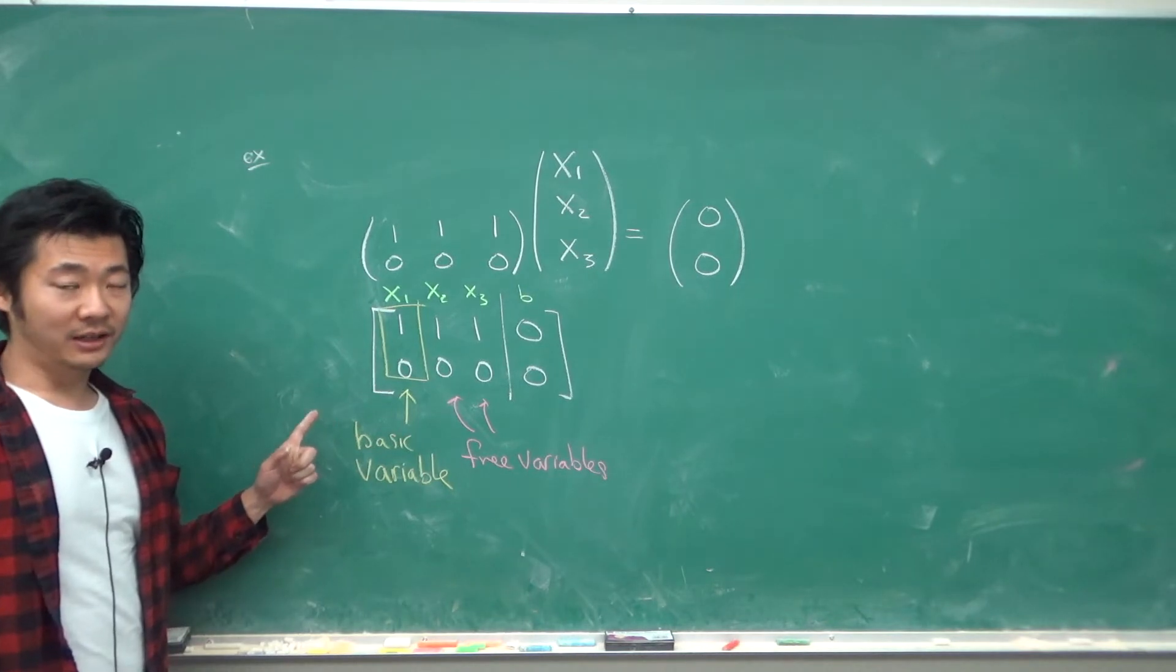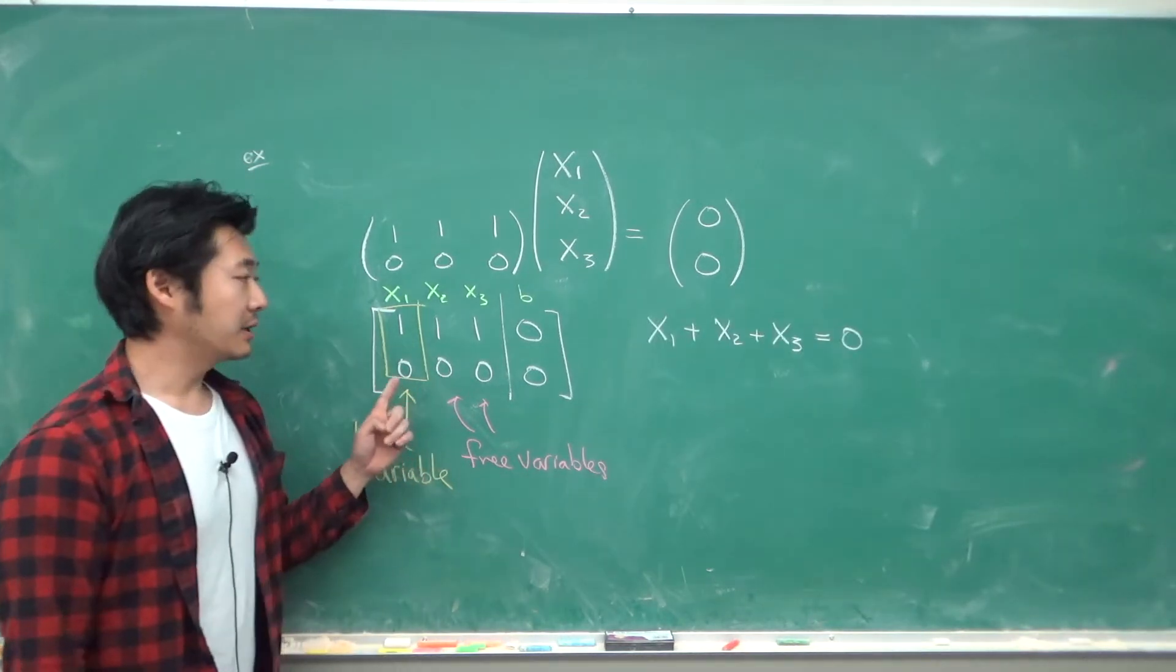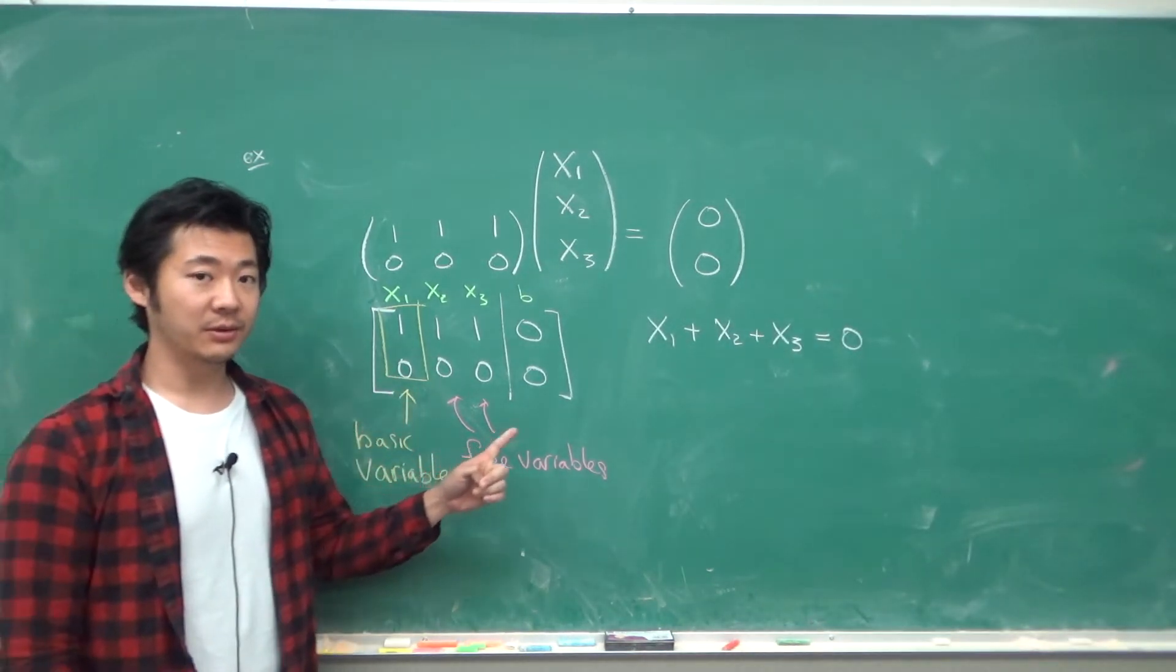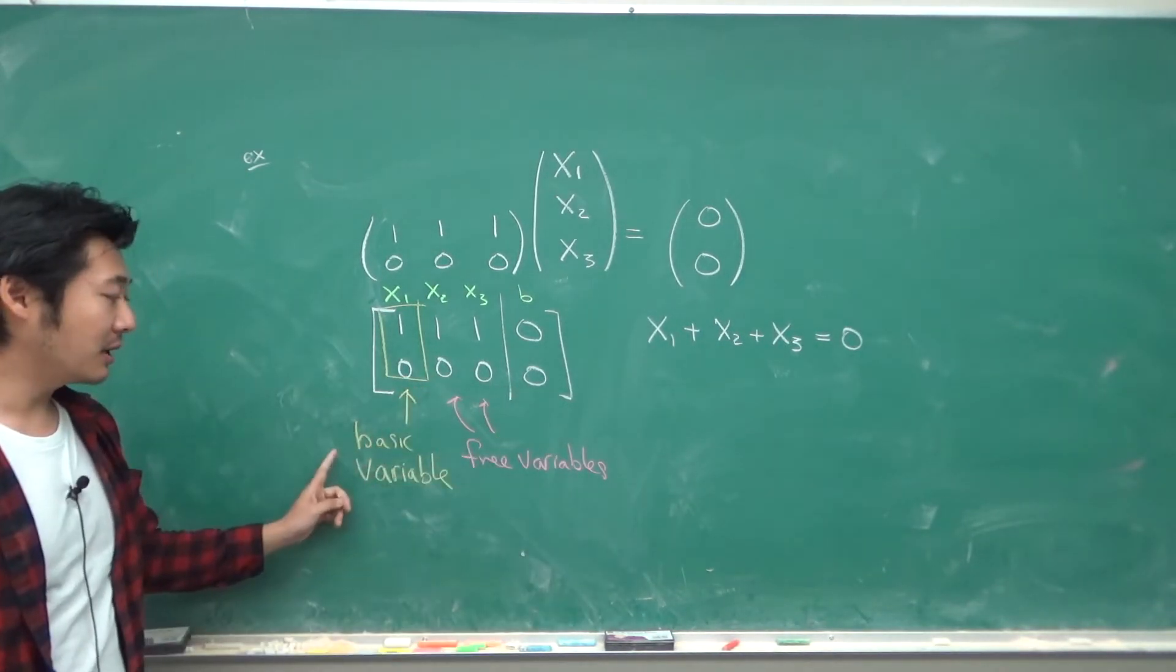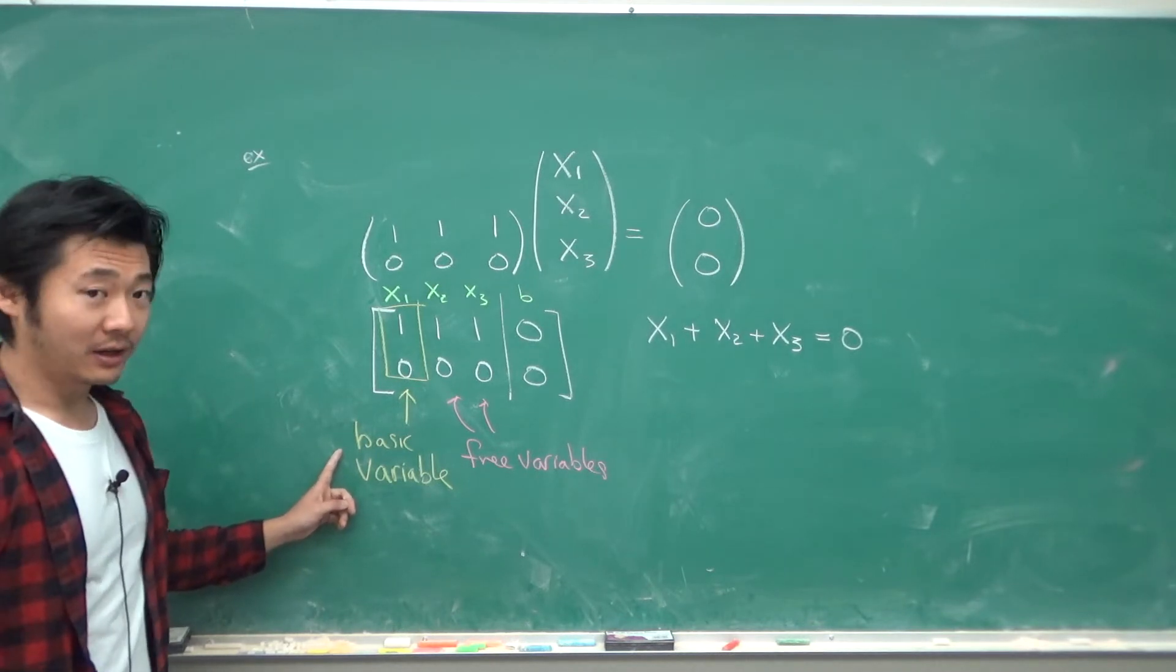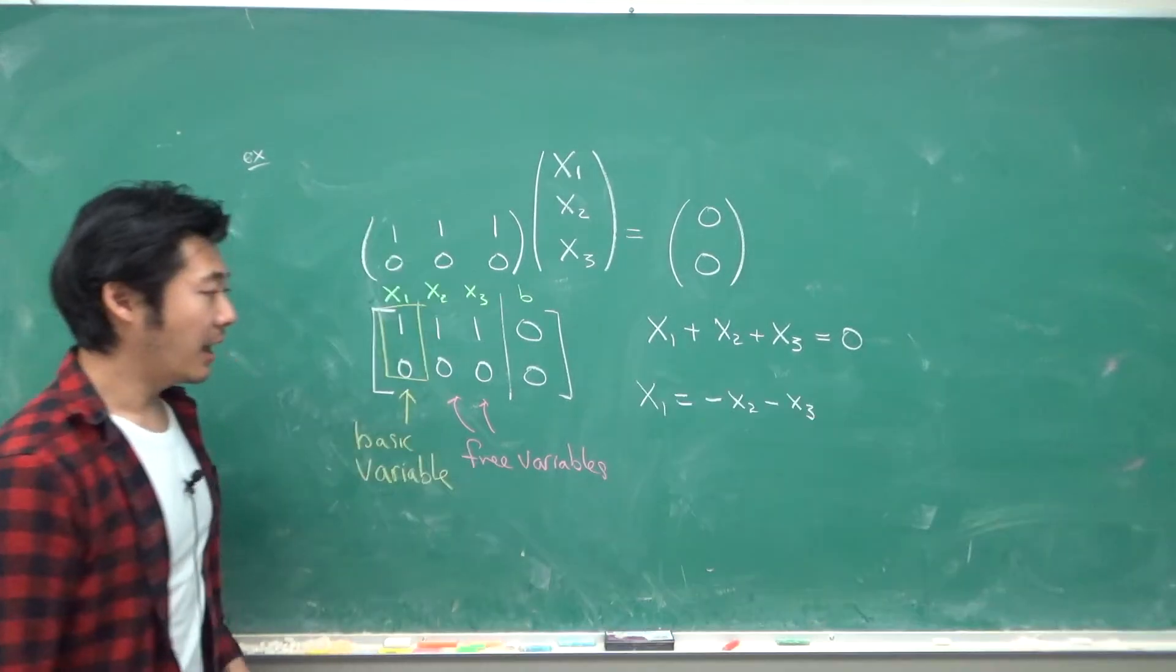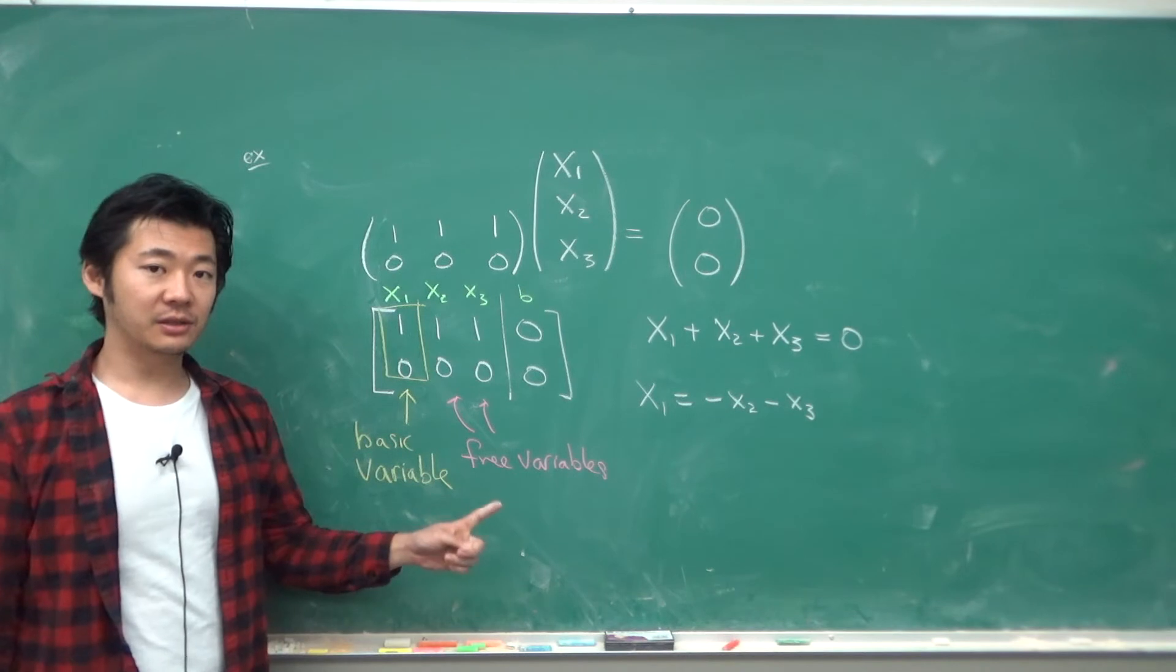Now, if we write out the corresponding linear equation, we'd have x1 plus x2 plus x3 equals 0. This row would give us 0 equals 0, so we'll omit that. Now, we want to solve for the basic variable. So we have x1 equals negative x2 minus x3.